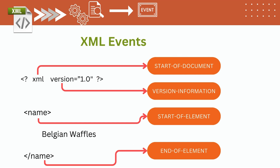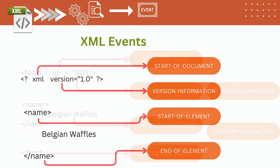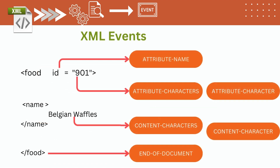As discussed earlier, each fragment within an XML document is associated with an XML event. The XML start tag is associated with the start-of-document event. The version attribute is associated with the version-information event. Each element start tag is associated with the start-of-element event. The content after each element start tag is associated with the content-characters event. If the content is a single character, the associated event is content-character.